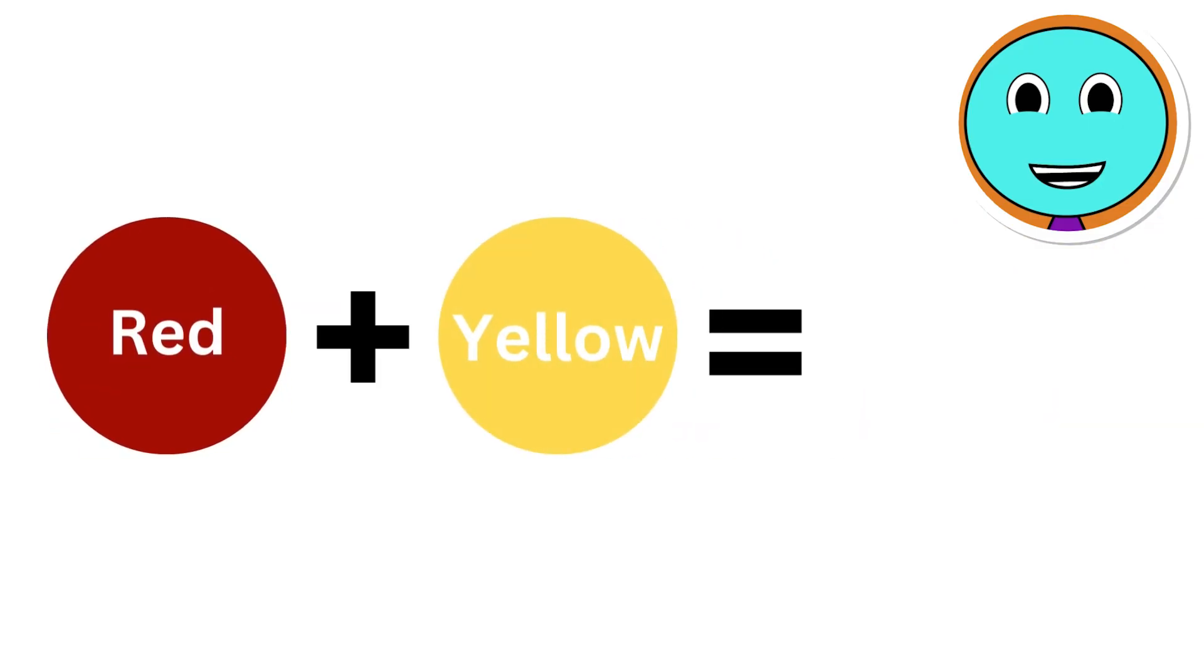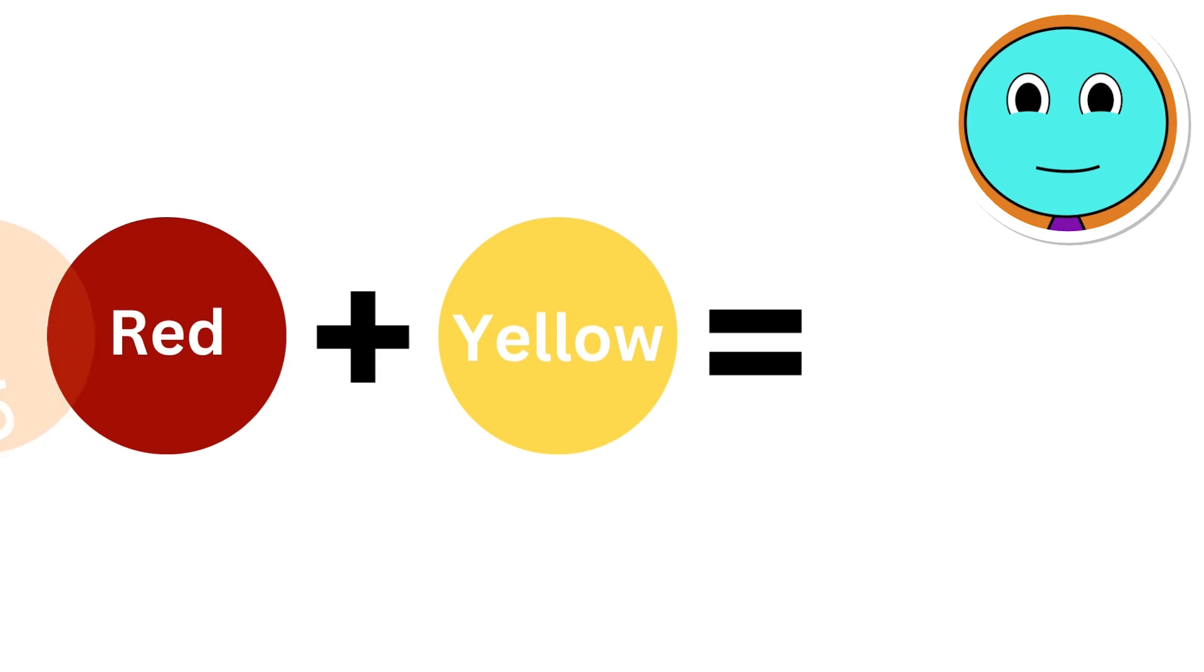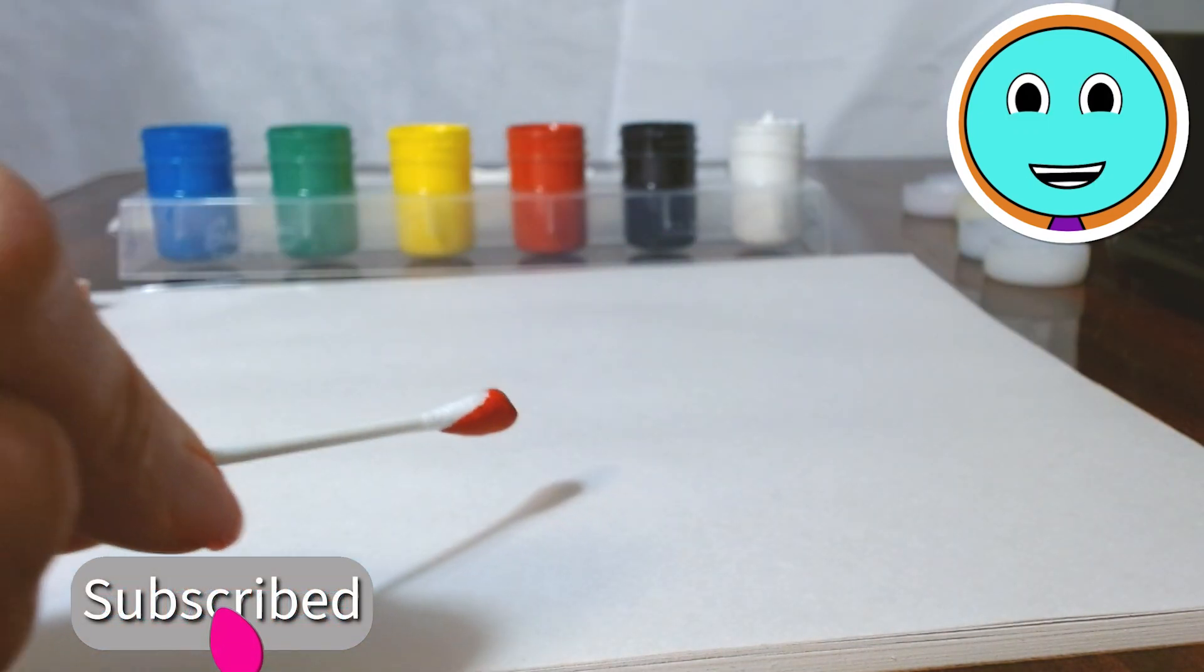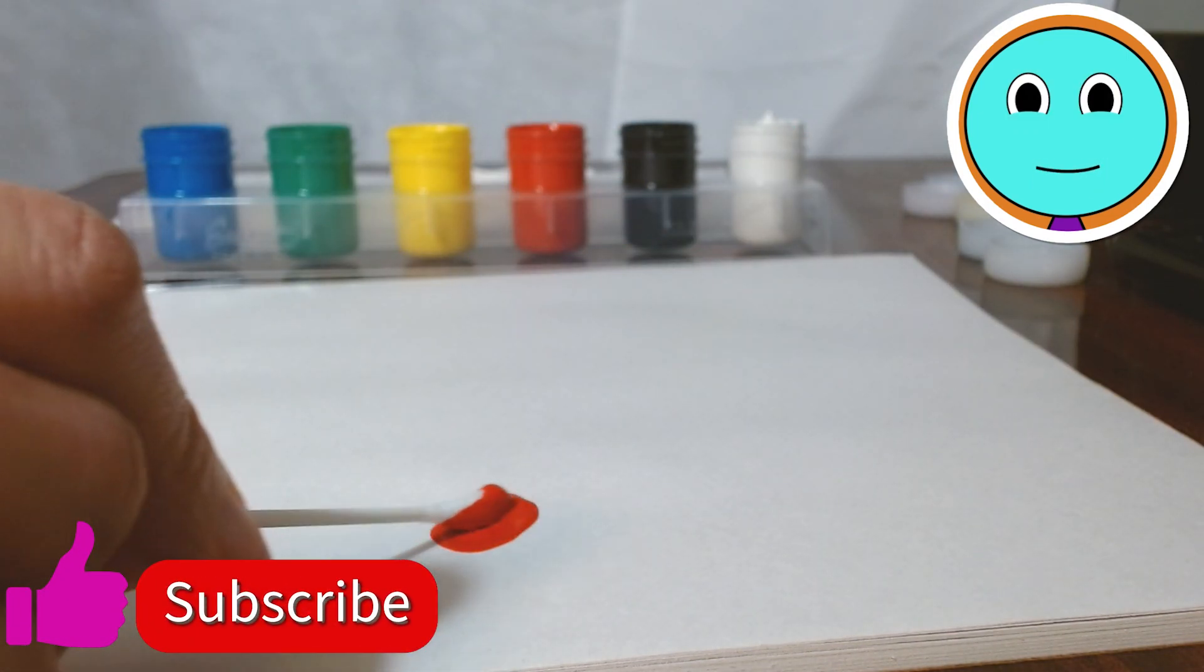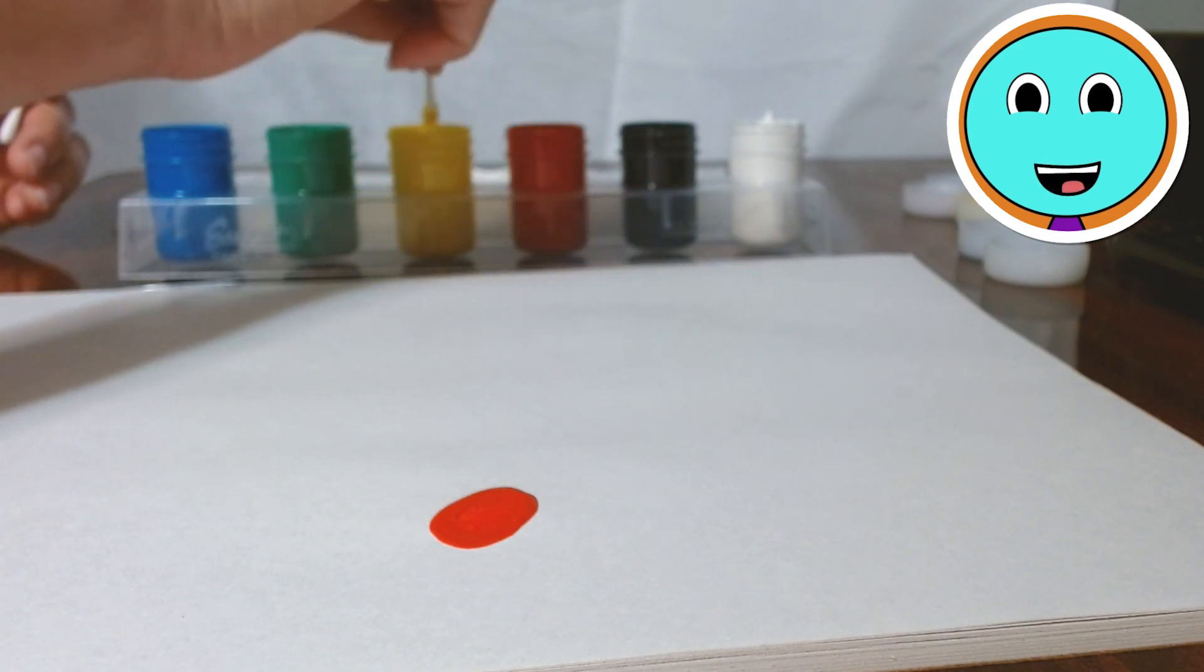First up, we have red and yellow. I wonder what color does red and yellow make when they're mixed together? Do you know? Right! Orange! Okay, let's take a look and see what our friend does with the colors red and yellow. Does it really make orange? Let's find out.